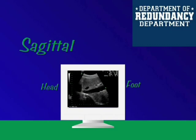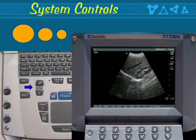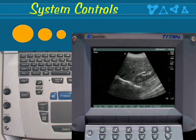The depth control adjusts the depth of field on the screen. This image is set too deep — the kidney is too high and there is much posterior detail which is not required. By making the image less deep, we move the kidney down in the image and achieve more magnification of the area of interest. This is accomplished by using the depth control.